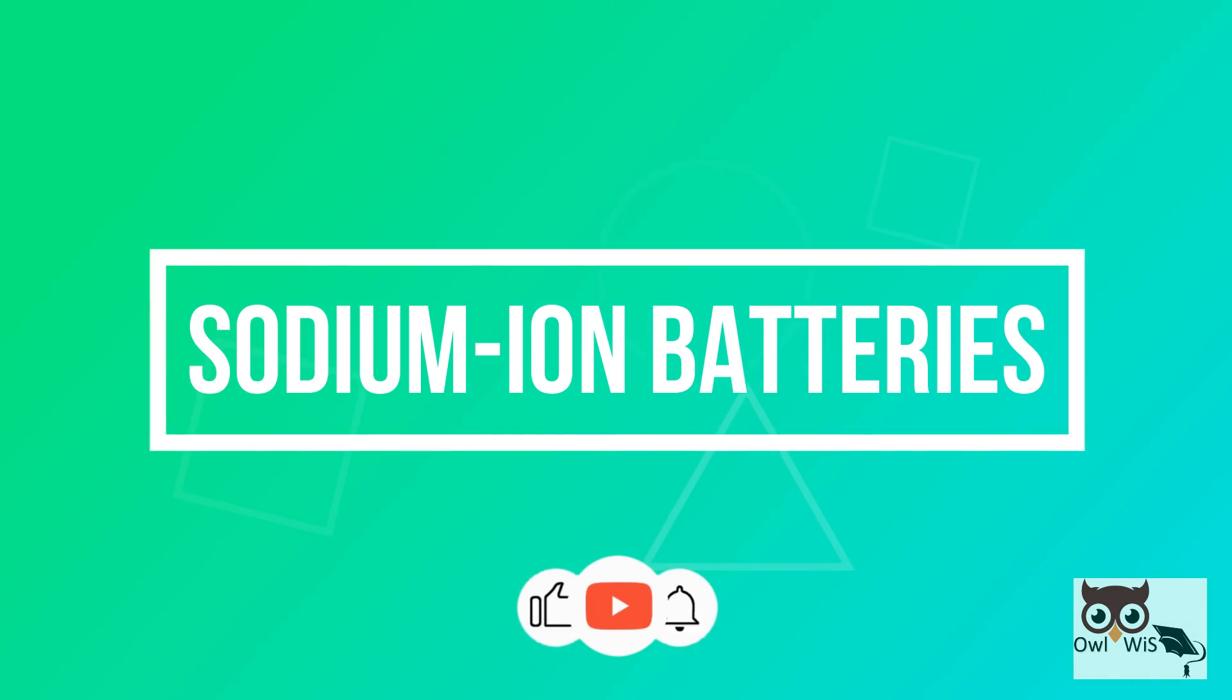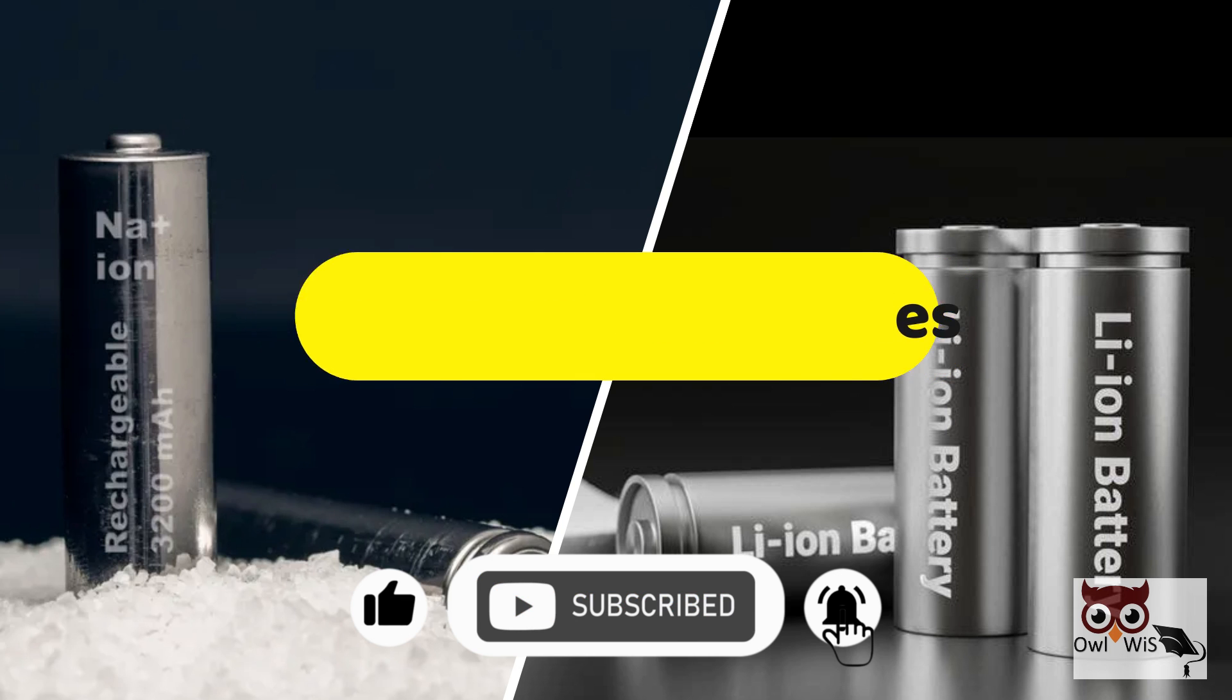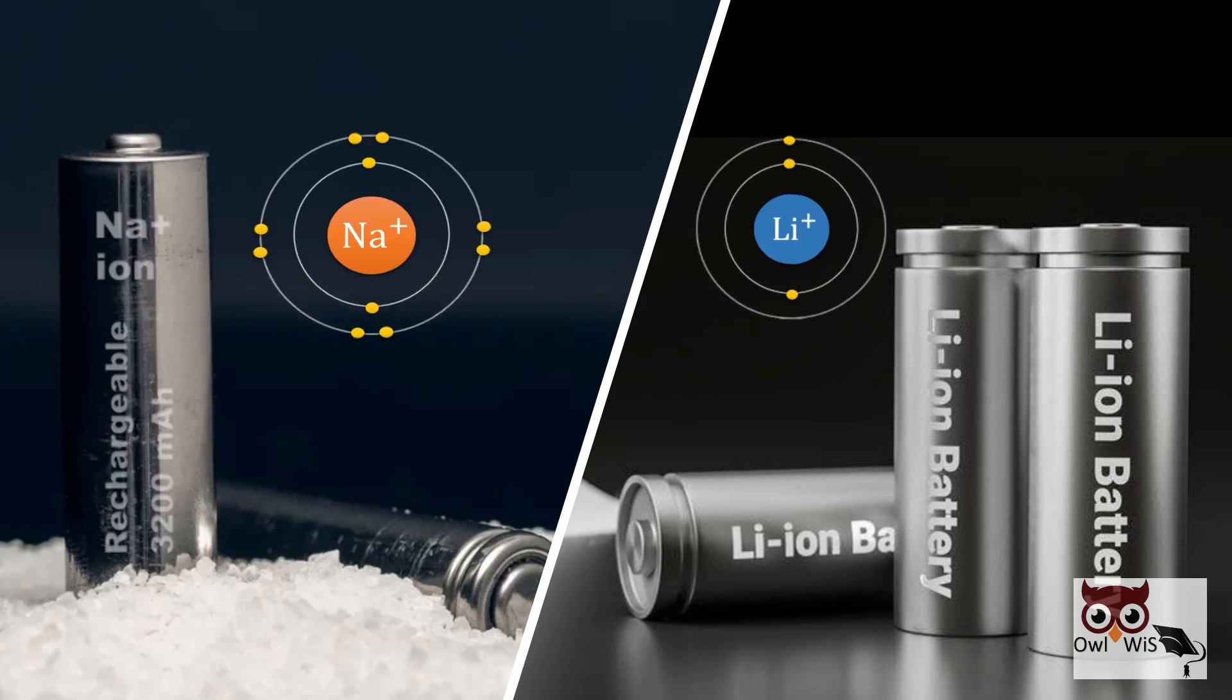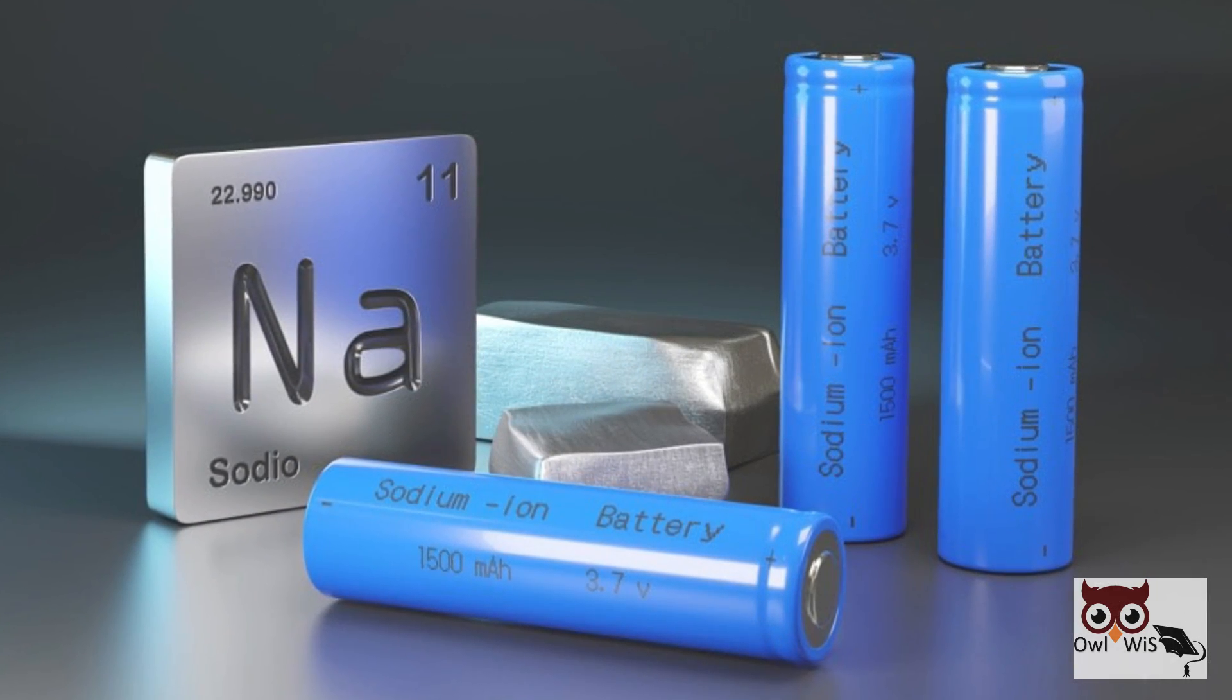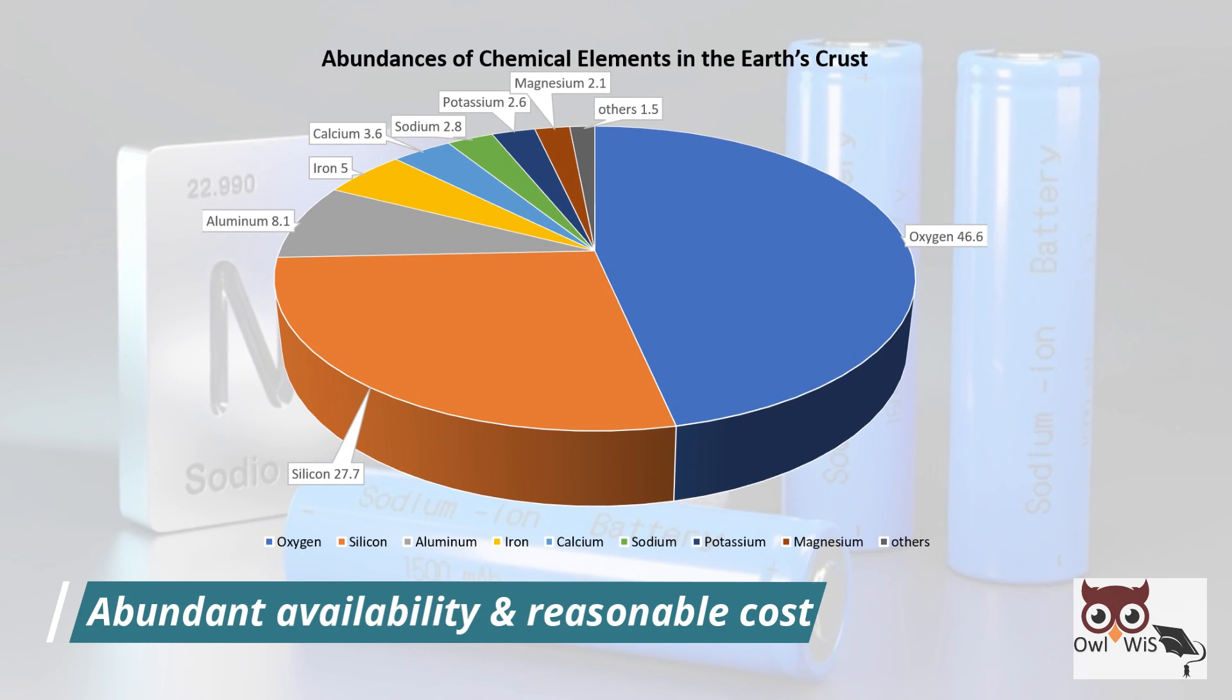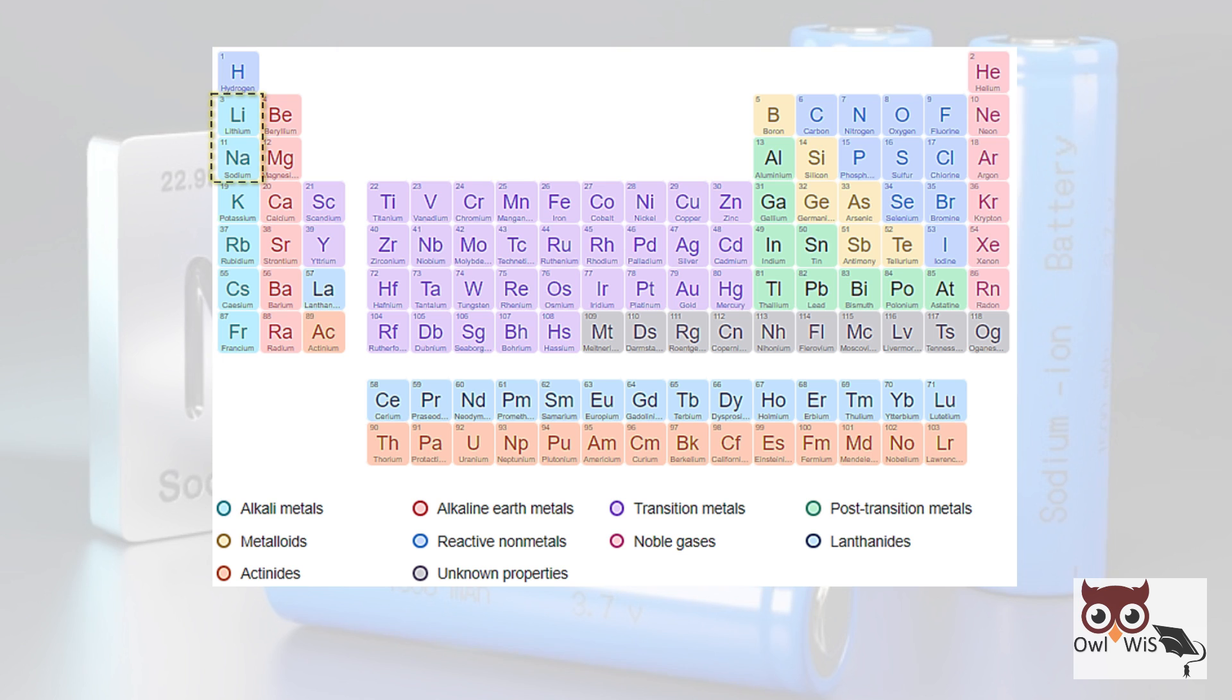Sodium ion batteries are a type of rechargeable batteries that work in a similar way to lithium batteries but carry the charge using sodium ions instead of lithium ions. Sodium ion batteries are currently evolving as a possible substitute for lithium ion batteries because of the abundant availability and reasonable cost of sodium.